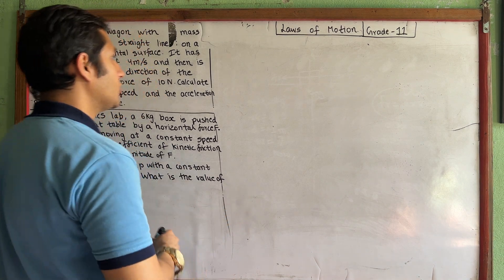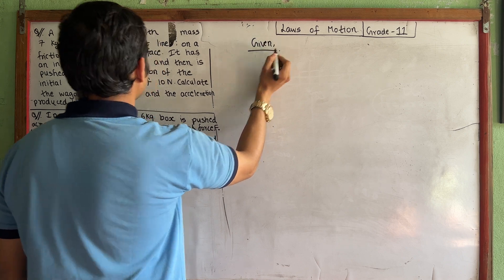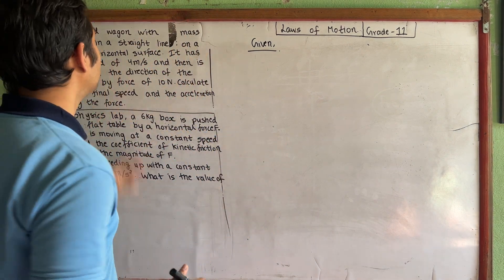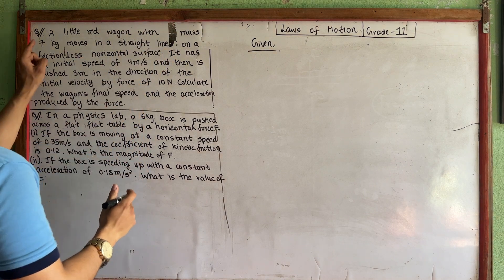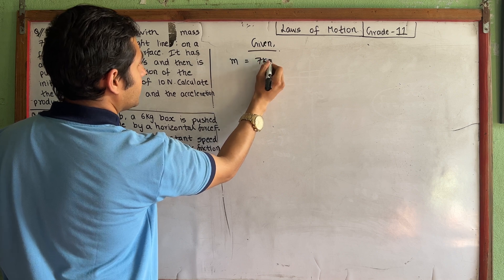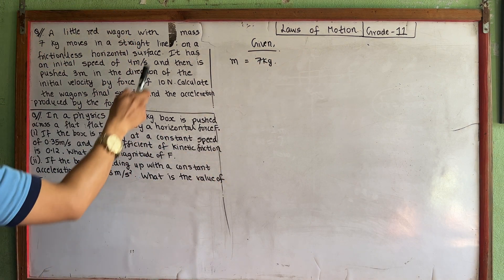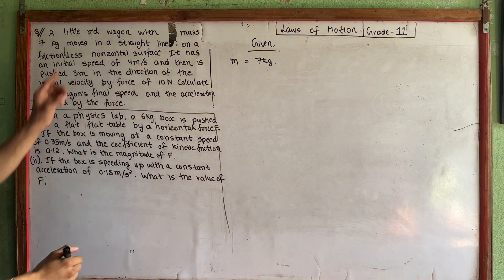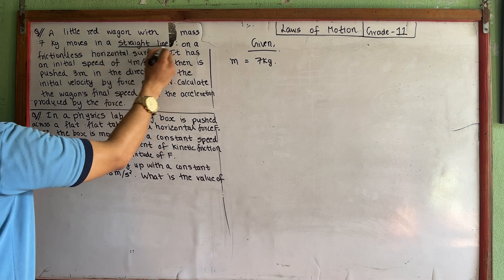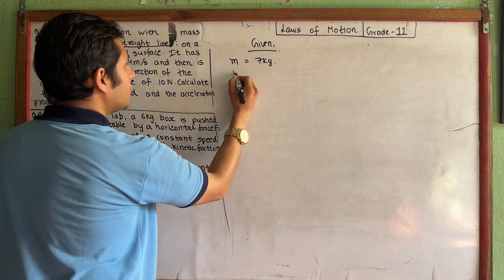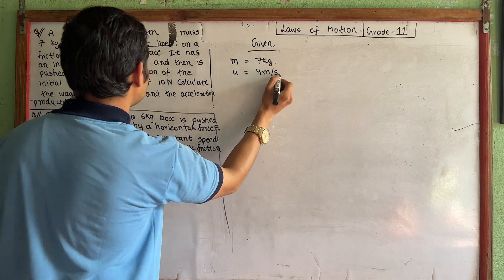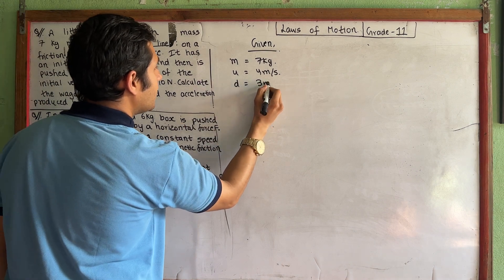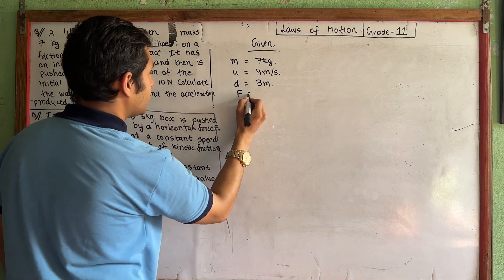Calculate the wagon's final speed and the acceleration produced. So what are the givens? It's a wagon — it's a body with mass 7 kg, moving on a frictionless horizontal surface. Initial velocity is 4 meters per second. The distance is 3 meters, and the force is 10 Newton.